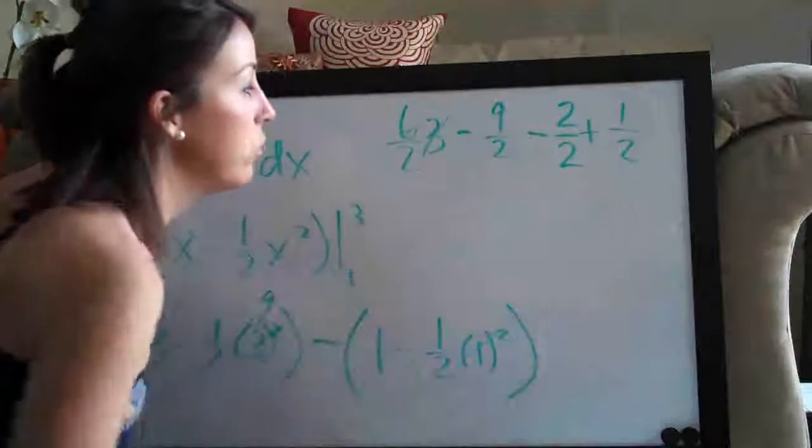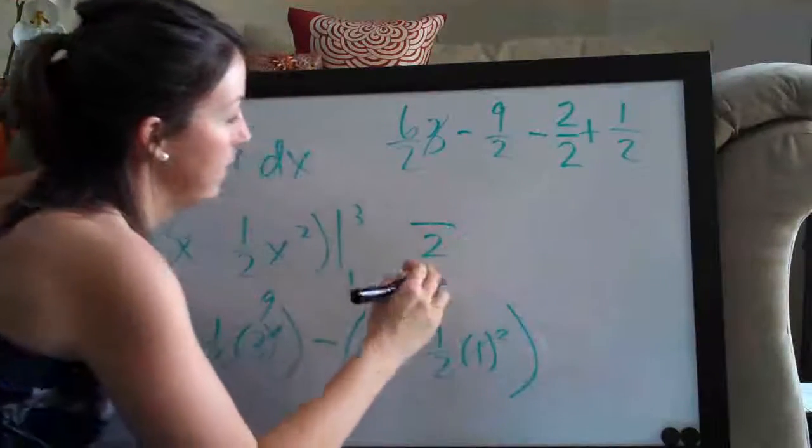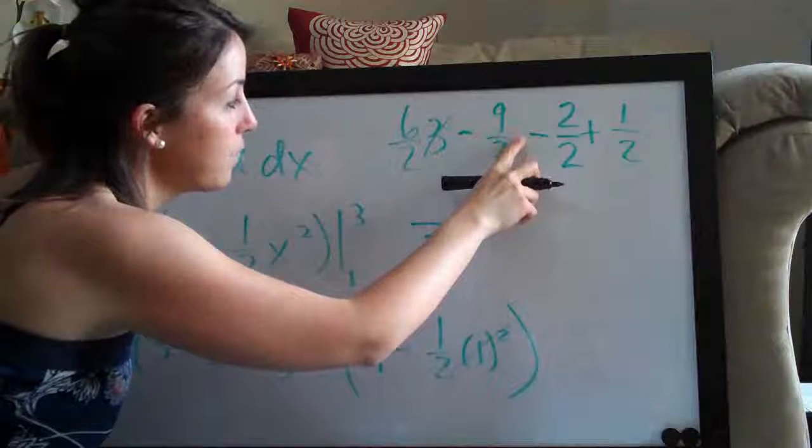And now since we've got 2 on the bottom of each of these, we can just go ahead and put 2 on the bottom and simplify the top. So 6 minus 9 is